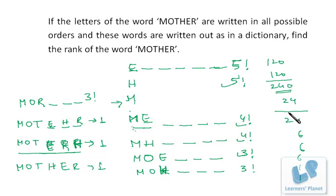So now 240 plus 48 that is 288 and this 18, 1, 2, 3, so that is 309. So the rank of the word MOTHER will be 309. I hope you are clear.